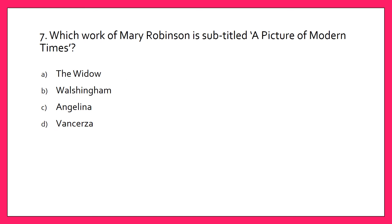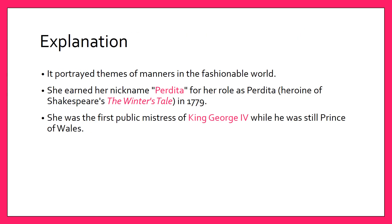Which work of Mary Robinson is subtitled A Picture of Modern Times? Your options are A. The Widow, B. Walsingham, C. Shangelina, or D. Wankerza. The answer is A. The Widow. It portrayed themes of manners in the fashionable world. She earned her nickname Perdita for her role as Perdita, the heroine of Shakespeare's The Winter's Tale in 1779. She was the first public mistress of King George IV while he was still Prince of Wales.